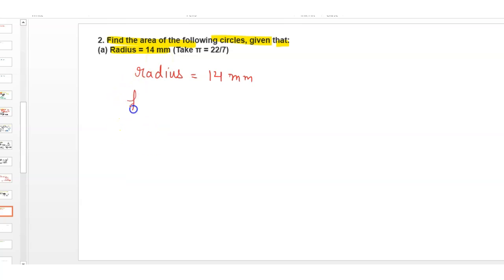So the formula used here: area of circle equals pi r squared, equals pi which is 22 upon 7, times r which is 14 squared, equals